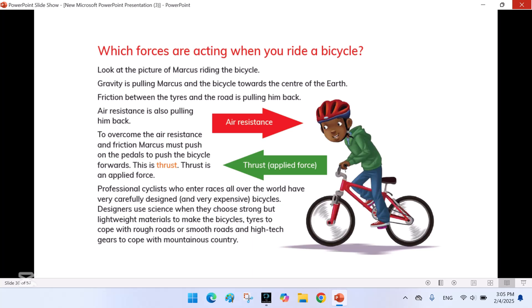Which forces are acting when you ride a bicycle? Look at the picture of Marcus riding the bicycle. Gravity is pulling Marcus and the bicycle towards the center of the earth. Friction between the tires and the road is pulling him back. Air resistance is also pulling him back. To overcome the air resistance and friction, Marcus must push on the pedals to push the bicycle forwards. This is thrust. Thrust is an applied force. Professional cyclists who enter races all over the world have very carefully designed and very expensive bicycles. Designers use science when they choose strong but light materials to make the bicycles, tires to cope with rough roads or smooth roads, and high tech gears to cope with mountainous country.